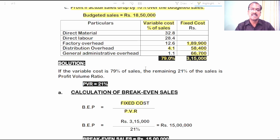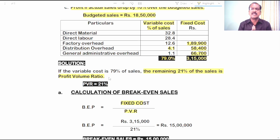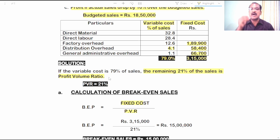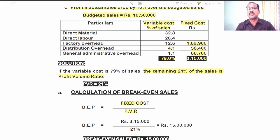What is PVR here? It's very simple. In the problem, it is clearly stated that 79% of sales is variable cost. Therefore, the remaining 21% of sales is the Profit-Volume Ratio, which stands for contribution. Sales includes variable cost and contribution — if sales is 100, variable cost is 79%, and therefore the remaining 21% is contribution. So contribution on sales as a percentage is the profit-volume ratio. That is why if 79% of sales is variable cost, the remaining 21% is the profit-volume ratio.